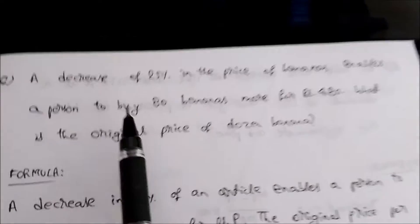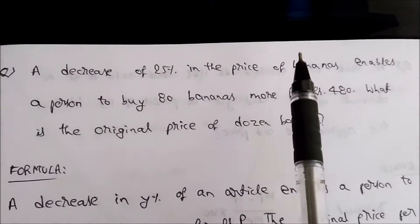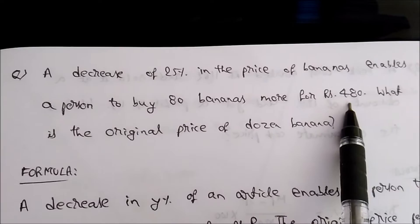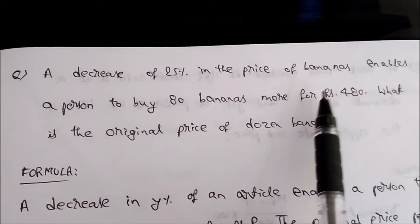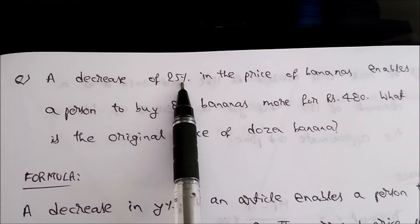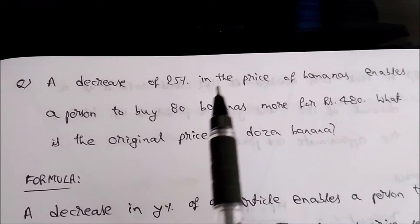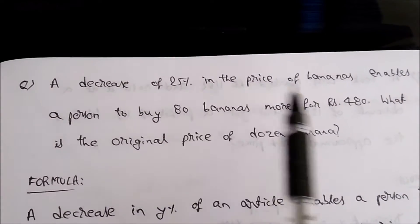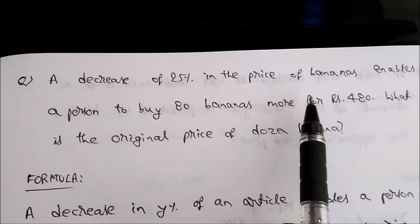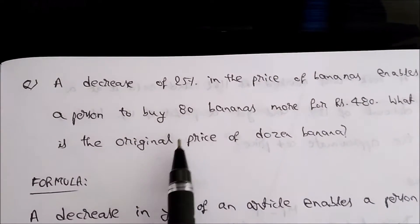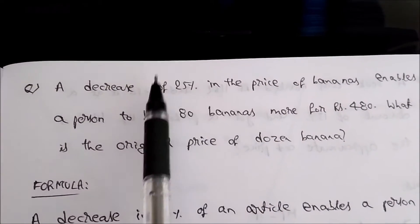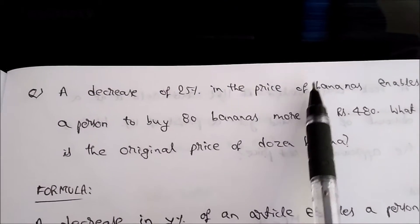The question is very simple. A person was able to buy a certain amount of bananas for rupees 480, but the banana price decreased by 25%, and hence he was able to buy 80 more bananas for the same cost of 480. Now we need to find the original price of a dozen bananas, that is, before the price decrease.